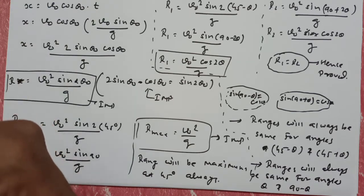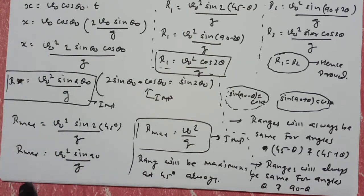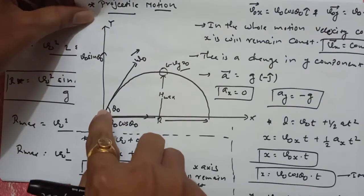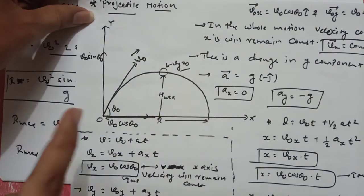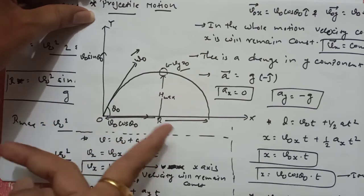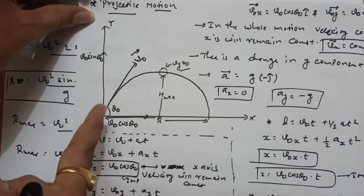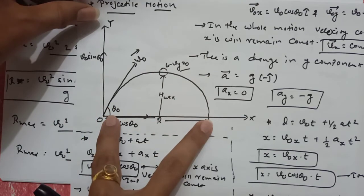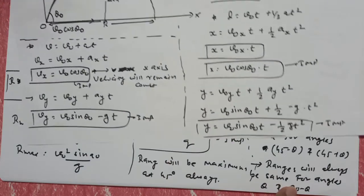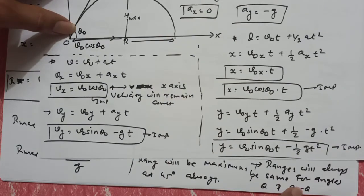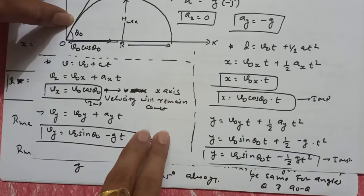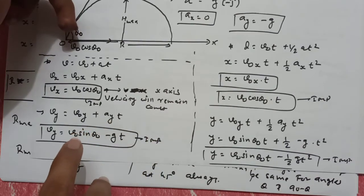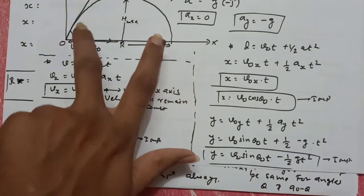मालो कि मैंने 30 degree के angle पर object को throw किया है, और मुझे कुछ range मिली। मैं ऐसा कौन सा एक और angle से throw करूँगा कि same range मिलेगी? तो theta and 90 minus theta — पहले theta है 30, so 90 minus 30 मतलब 60, दूसरा angle हो जाएगा 60। तो 30 degree और 60 degree से throw करोगे, दोनों में आपको same range मिलेगी।